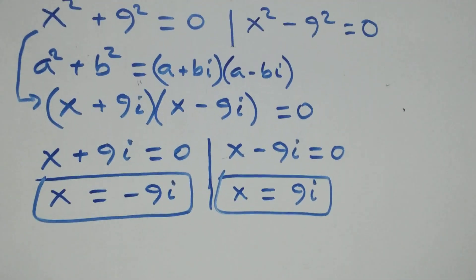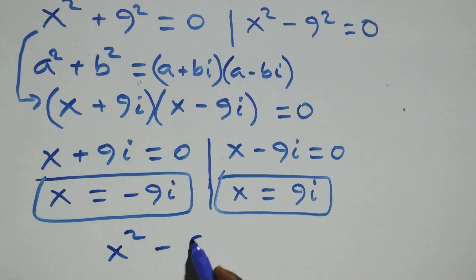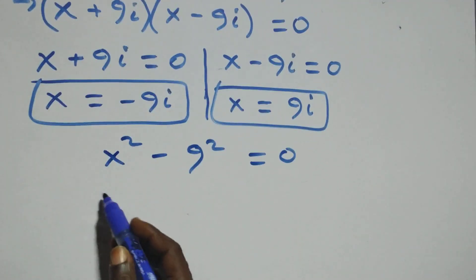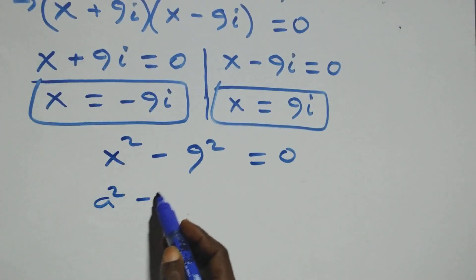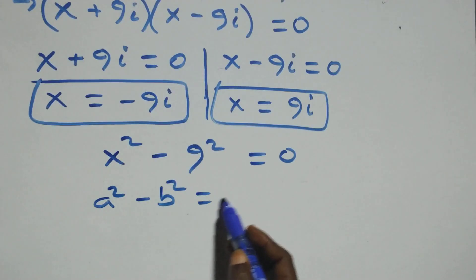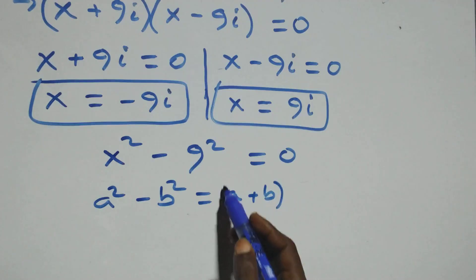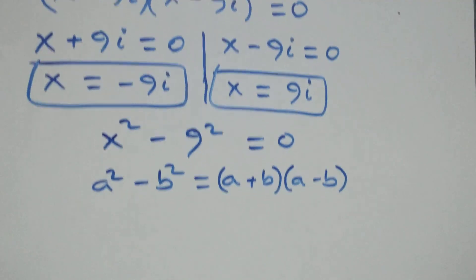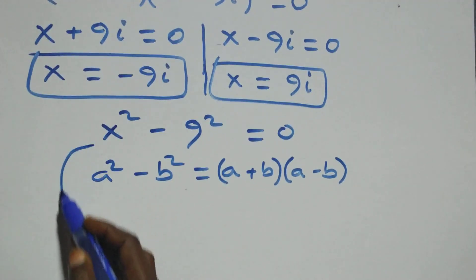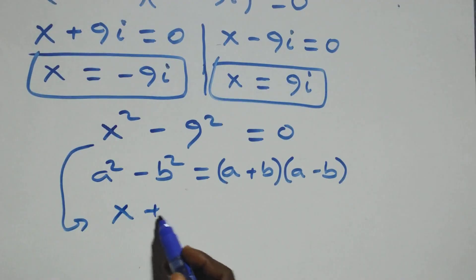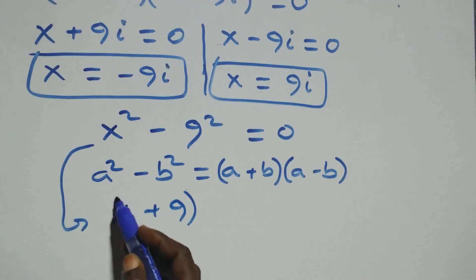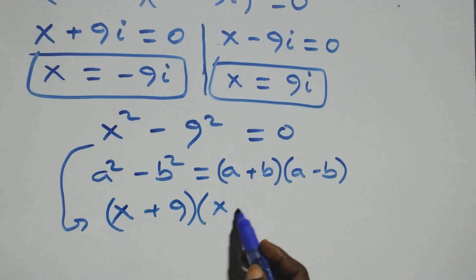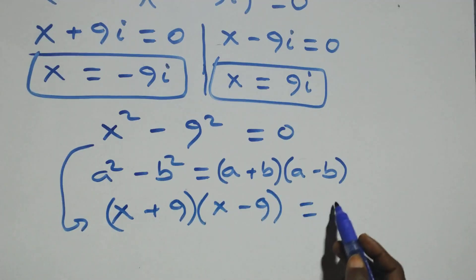Now solving the second case: x² − 9² = 0. This also follows the difference of squares: a² − b² = (a + b)(a − b). So this becomes (x + 9)(x − 9) = 0.